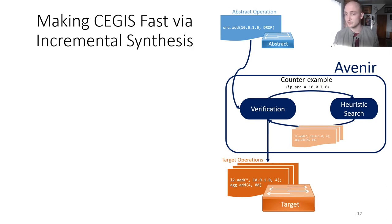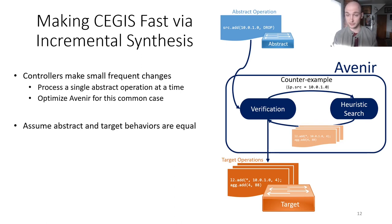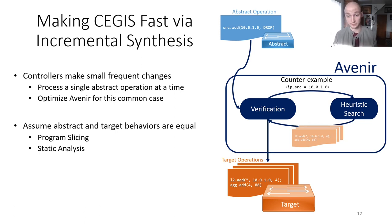The first optimization is to make Avenir incremental — that is, it only processes a single operation at a time. The justification for this change is domain-specific: controllers typically make incremental changes to the target, so we optimize our algorithm for this common case. Formally, we assume that the abstract and target behaviors are equal before each invocation of Avenir, which means that any semantic change in the behavior comes from the newly added rule, which allows us to slice away irrelevant rules, use static analysis to determine which target tables we should modify, along with configurable domain-specific heuristics.